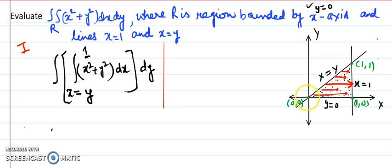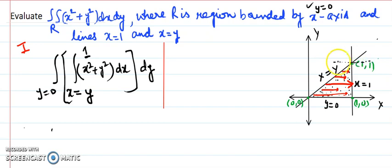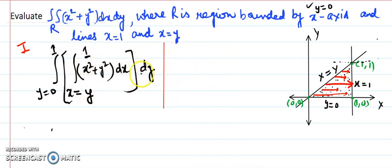The minimum value of y from the diagram is 0, so y equals 0 is the lower limit, and the maximum value is 1, so y equals 1 is the upper limit. This is why we label the diagram — so we can integrate with respect to x first and then with respect to y.